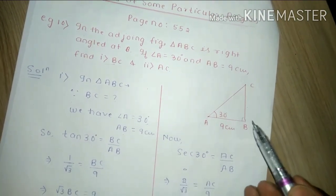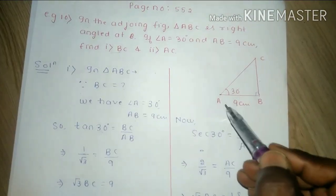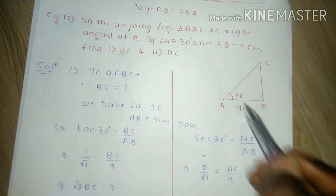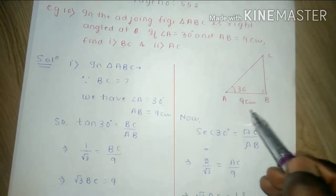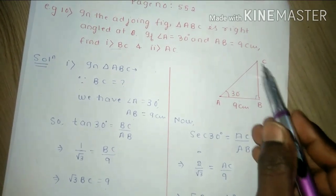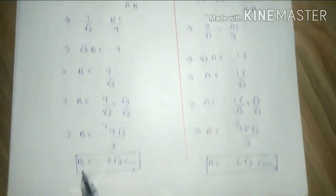Now look at hypotenuse and base, which is trigonometric ratio relation. So we know sec theta which is hypotenuse upon base relation.